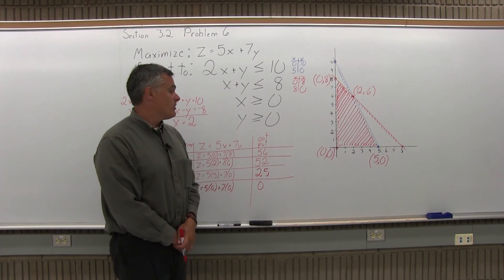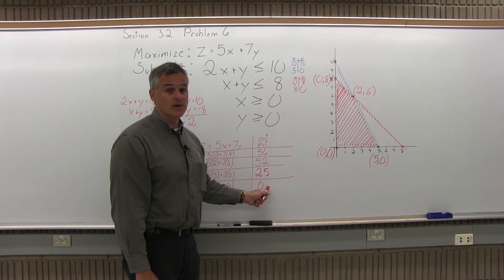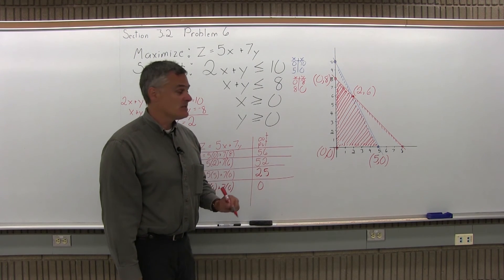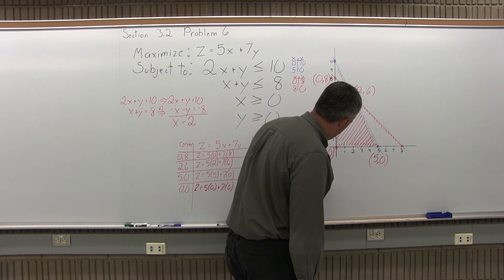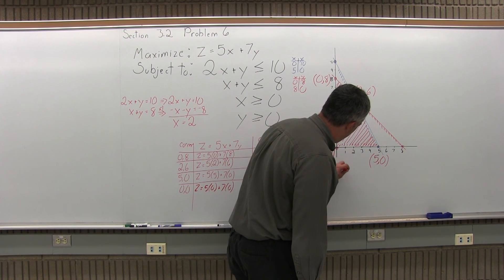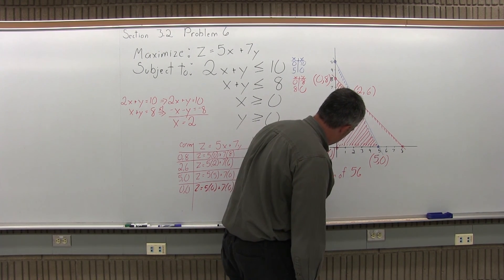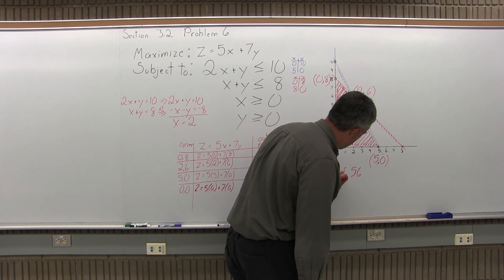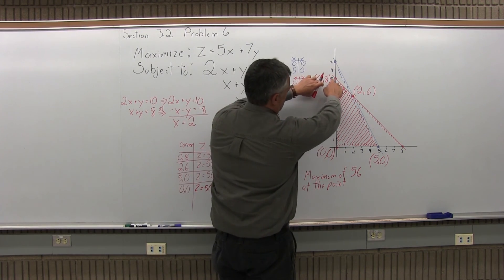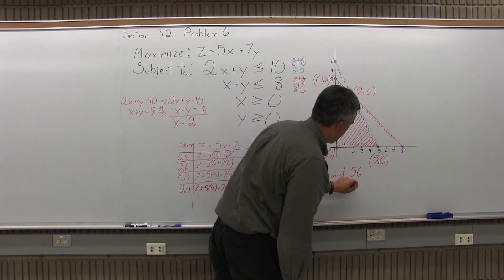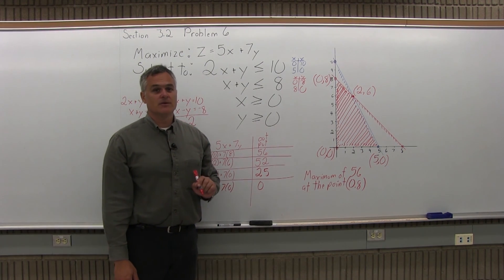Step 4 is state your solution. So where we want to maximize the outputs that we have to choose from are 56, 52, 25, or 0. Well, the biggest output is clearly the 56. So that's the maximum. So for step 4, state your solution, we would write maximum of 56. You have to say, well, you got the 56, so you put at the point. Now the 56 came from the point 0, 8. So the maximum of 56 at the point 0, 8.